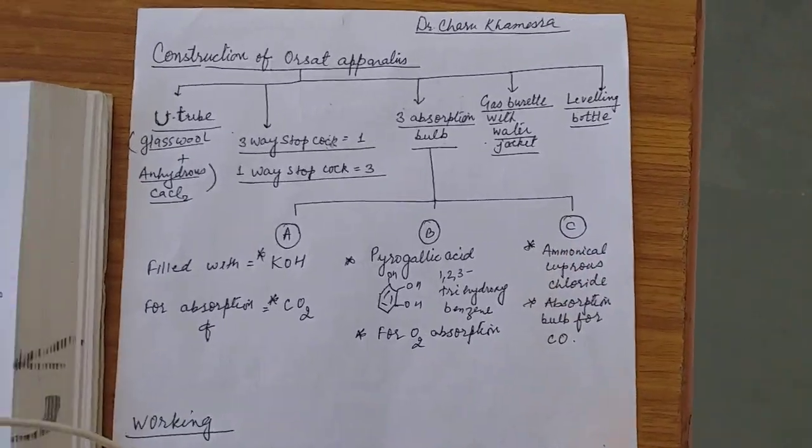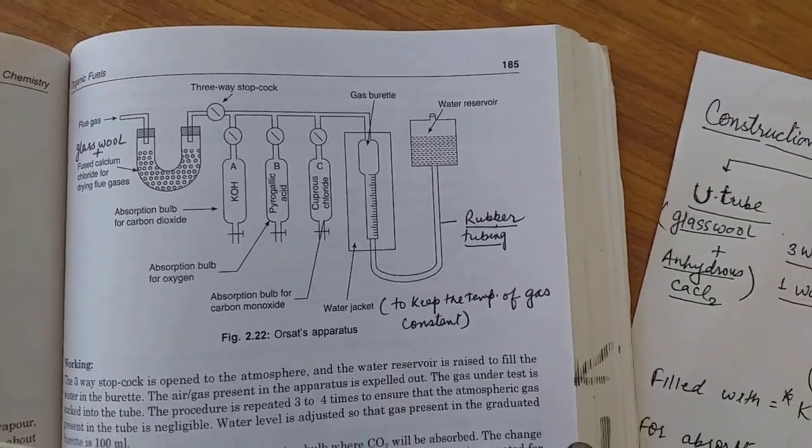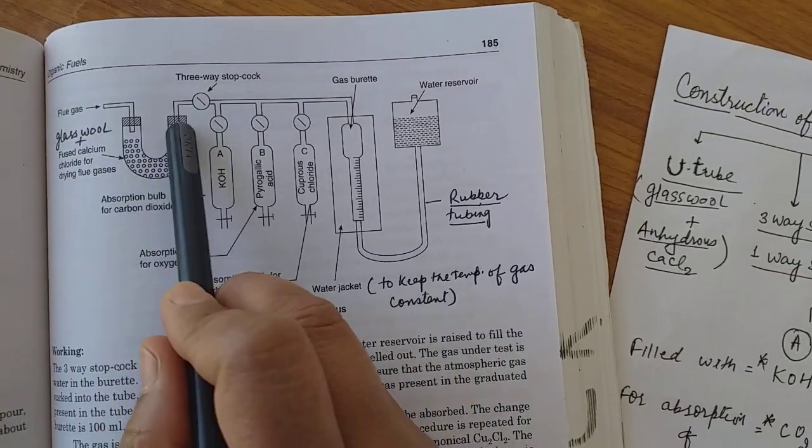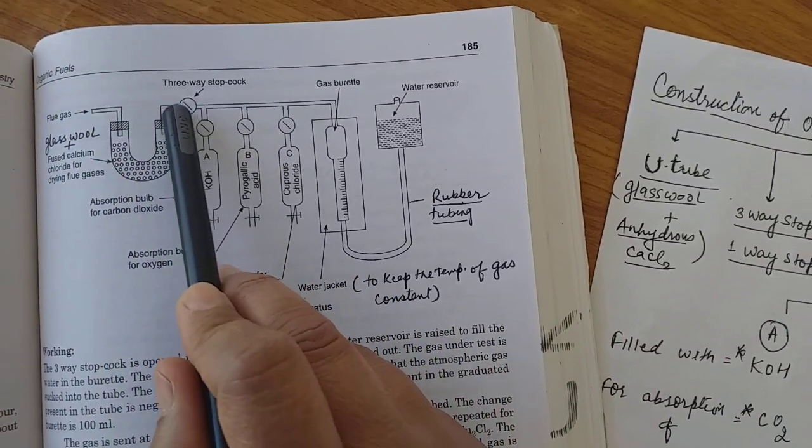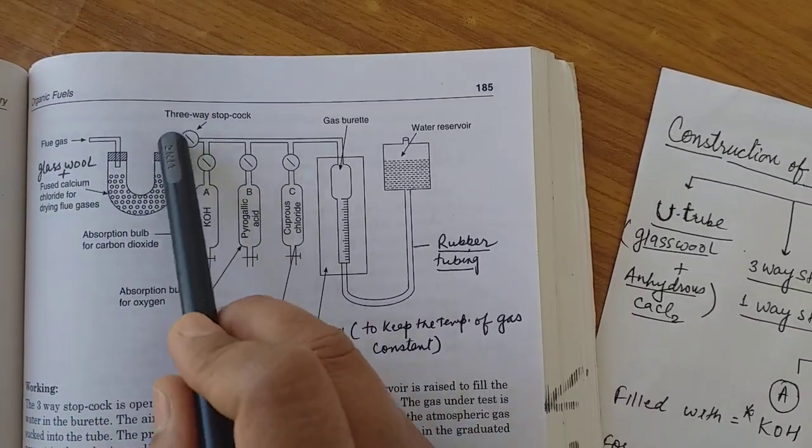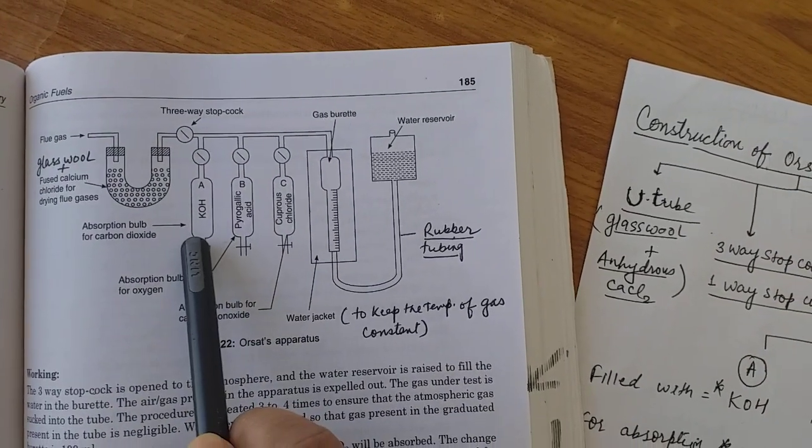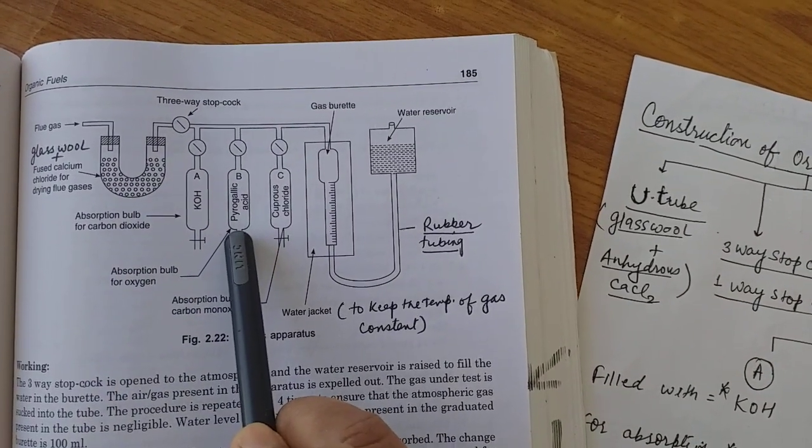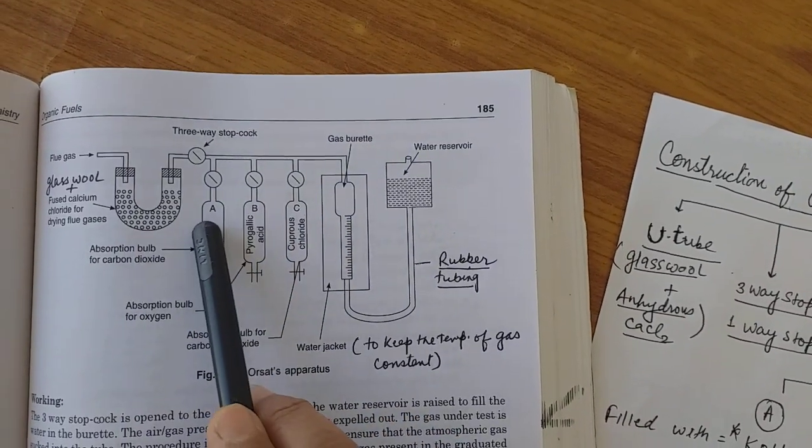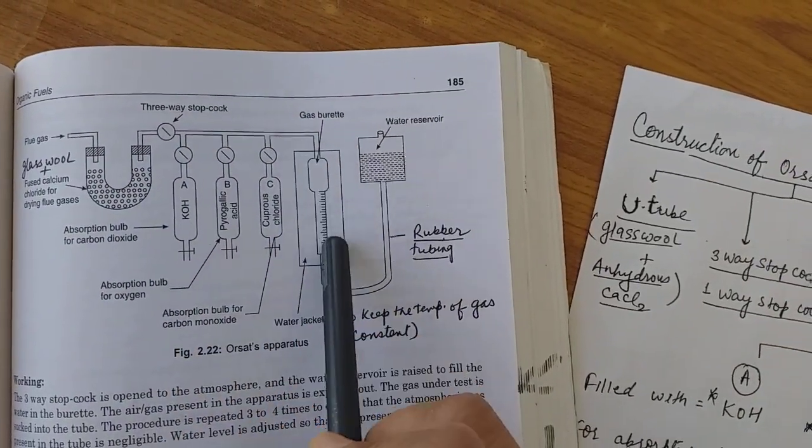Actual figure is like that. This is a figure of Orsat apparatus. This is U-tube, this is three-way stopcock which is here on the horizontal tube. On the first end U-tube, and it is three-way stopcock. After, there are three bulbs: first bulb containing KOH, second bulb containing pyrogallic acid, third bulb containing cuprous chloride. These are the bulbs in the sequence A, B, and C. We cannot alter these sequence.